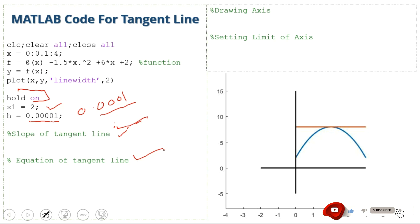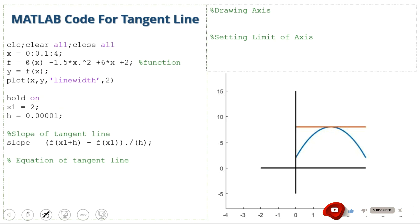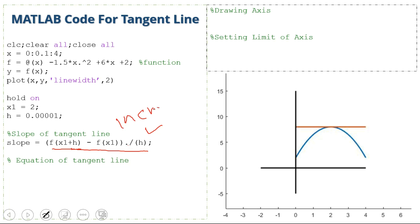For the tangent line we first calculate the slope, then the equation of the tangent line. The slope is computed using the first derivative increment form: slope = (f(x1 + h) - f(x1)) / h.